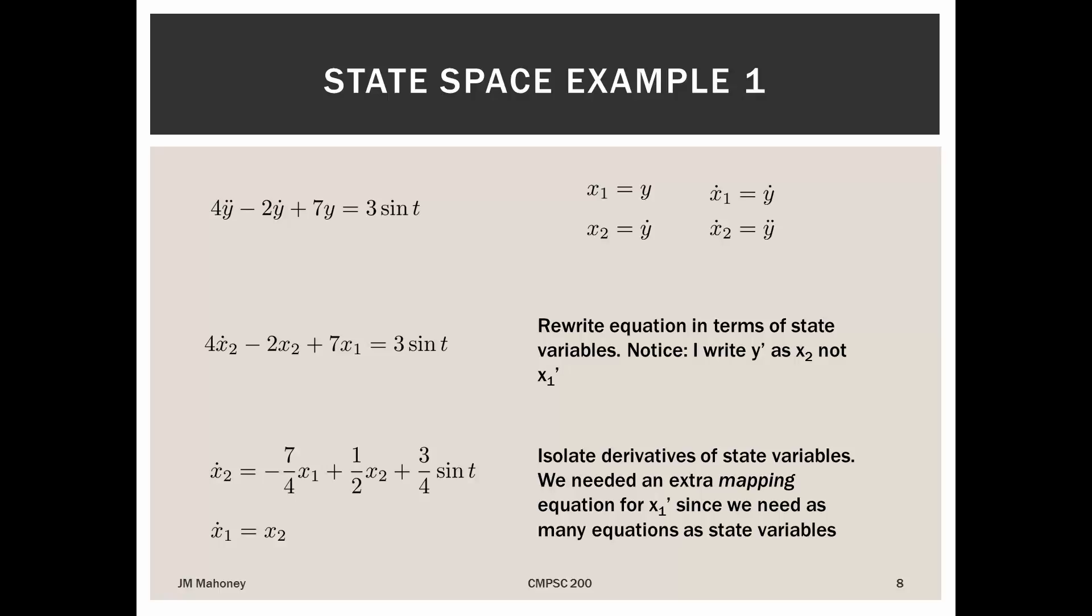And what I also need, because I need as many equations as I have state variables, I have two state variables here, x1 and x2. I have a definition for x2 dot, but I also need to write an equation for x1 dot. This is what we call a mapping equation. So as I mentioned at the start of this, I can write y dot two different ways. x2 is equal to y dot, but also x1 dot is equal to y dot. This is where I'm going to put that into play. I have to write as a second equation that x1 dot is equal to x2.